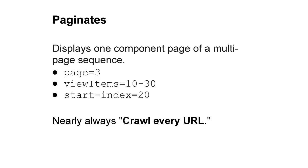The last parameter is paginates. Paginates displays one component page of a multi-page sequence. Examples are page equals 3, view items equals 10 through 30, or start index is 20. With paginates, because you want us to crawl every page to reach all of your items, it's nearly always 'crawl every URL.'